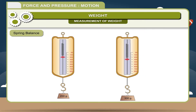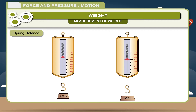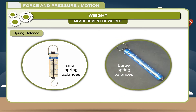A spring balance works on the principle that the extension produced in a spring is directly proportional to the weight suspended from it. If the weight of a body is more, the extension produced in the spring will also be more — in other words, the pointer will move downwards to a greater extent. Small spring balances are used in laboratories, and large balances are used for other purposes.